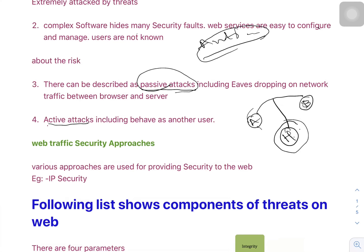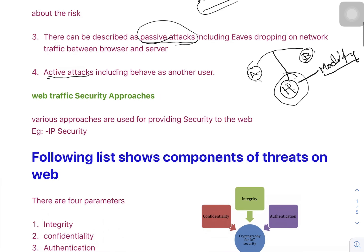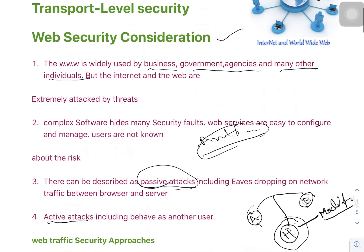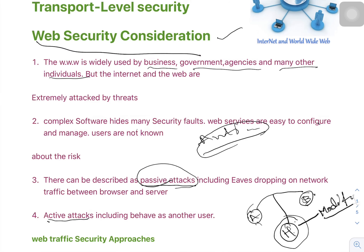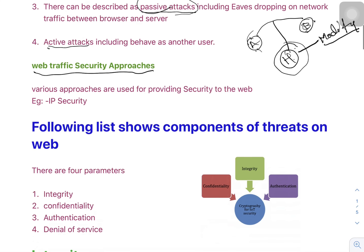In an active attack, there are two persons A and B. A is sending a message to B. The hacker cannot only see the message but also modify the message. So in the active attack, the hacker can modify the message. After the web security consideration, let us look at web traffic security approaches.